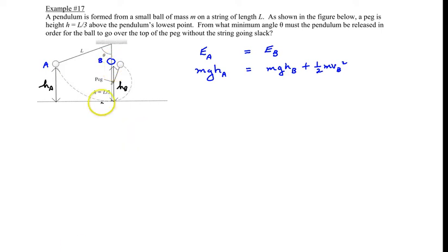So we're told that the peg is placed at a height of L over 3. So a third of the total length of the string. So then the height here HB would then be 2L over 3, because it would be basically 2 radii or the diameter of this circle.